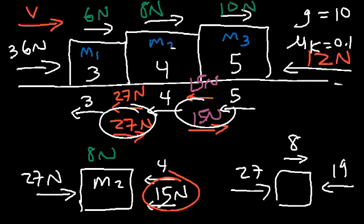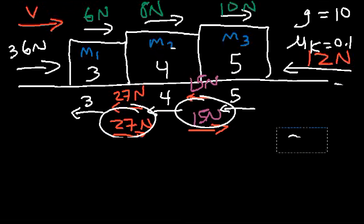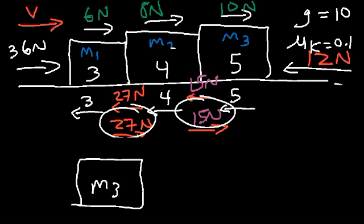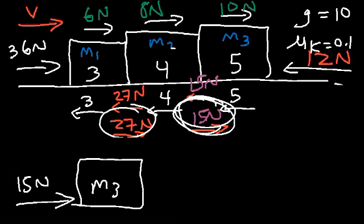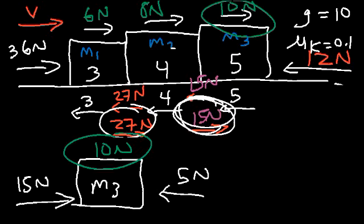To verify: block 3 feels 15 newtons to the right from block 2, and has a frictional force of 5 newtons. 15 minus 5 gives a net force of 10 newtons, which matches what we calculated. Everything works out. So now you know how to find the contact force when friction is present and when it's not present.